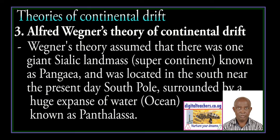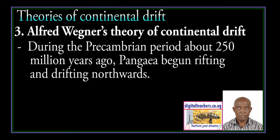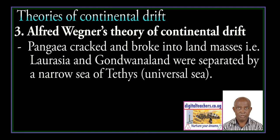There was one giant supercontinent known as Pangea, located near the present-day South Pole, surrounded by a huge expanse of ocean known as Panthalassa. During the Precambrian period, about 250 million years ago, Pangea began drifting northwards. Pangea cracked and broke into land masses — Laurentia and Gondwanaland — separated by a narrow sea called the Tethys or Universal Sea.